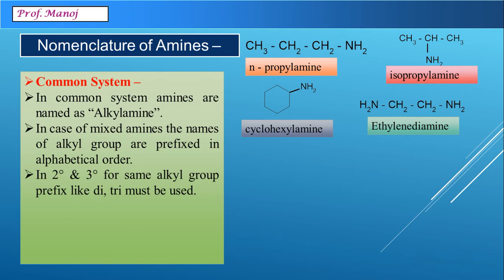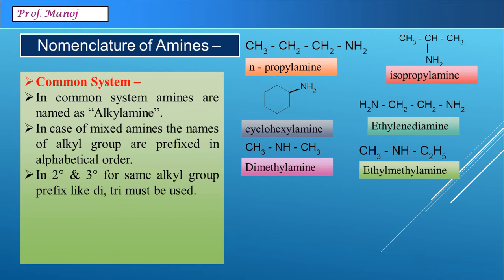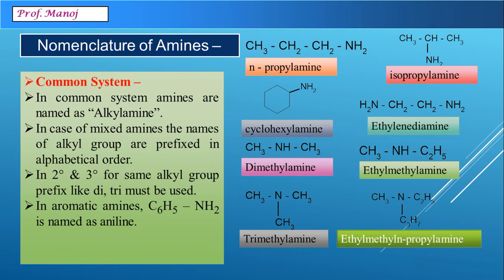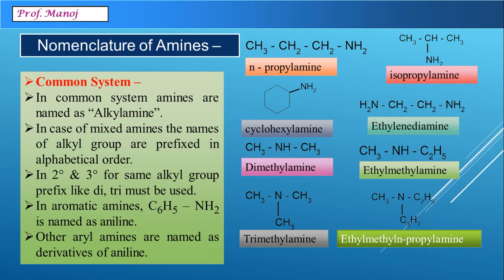For secondary and tertiary amines, prefixes di and tri are used if the groups are similar. For example, two methyl groups connected to NH gives dimethyl amine. If the groups are different, we name them in alphabetical order: ethyl methyl amine. For a tertiary nitrogen with all three groups similar, it is trimethyl amine. If all groups are different, we say ethyl methyl n-propyl amine. For aromatic amines, C6H5NH2 is called aniline, and all other aryl amines are named as derivatives of aniline.